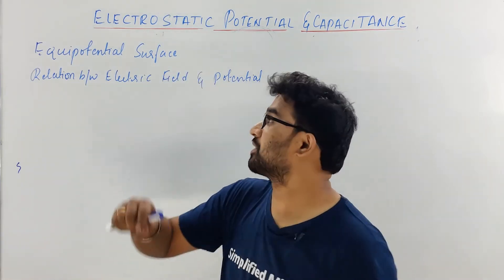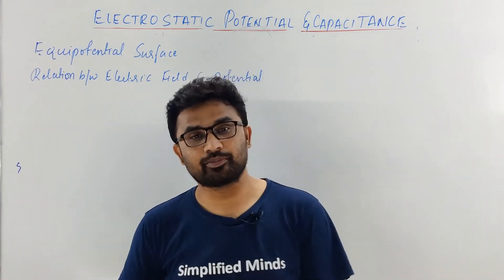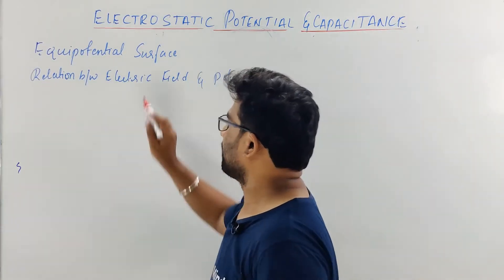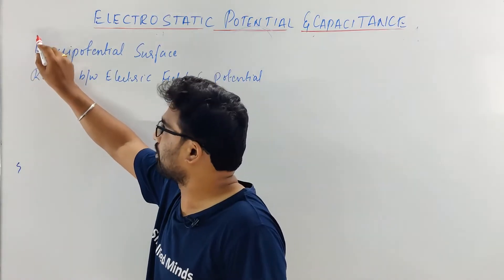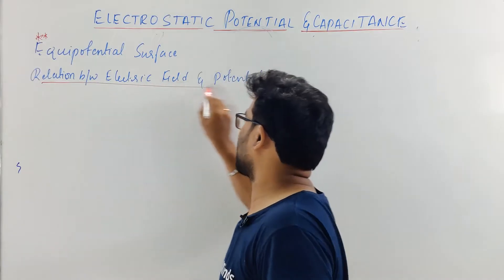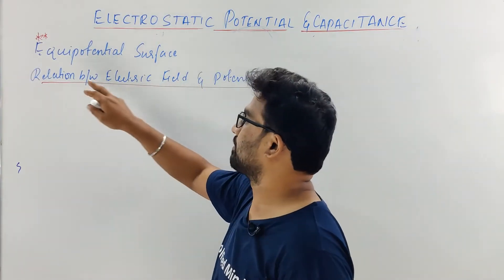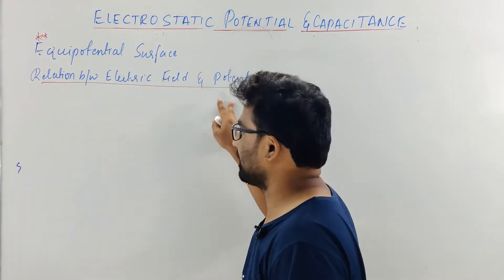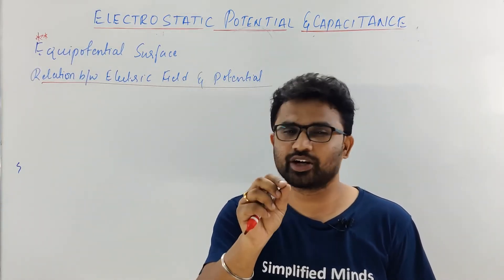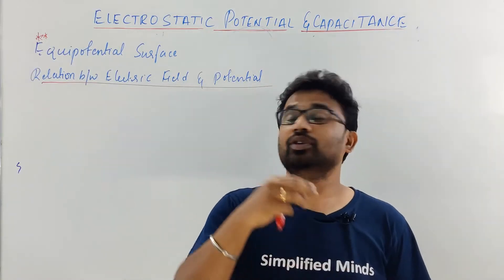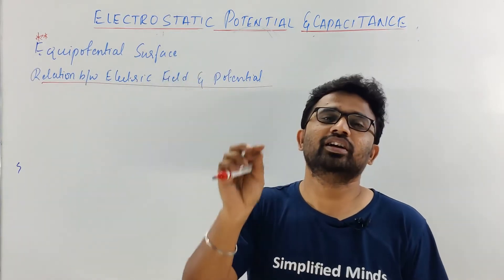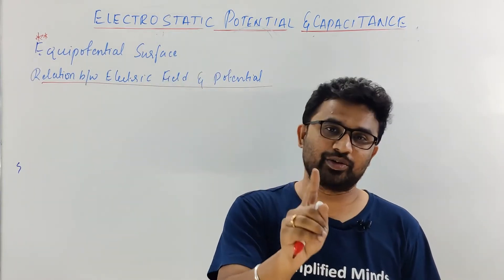Hello, welcome to Simplified Minds and welcome to the next lecture on Electrostatic Potential and Capacitance. This lecture will discuss about Equipotential Surface, which is an important one-mark or two-mark question for your PUC board exam. This derivation usually comes sometimes for two or three marks — the relation between electric field and electric potential. If you're understanding everything, don't forget to give a thumbs up. Comment and let me know that you understood everything and made the notes.